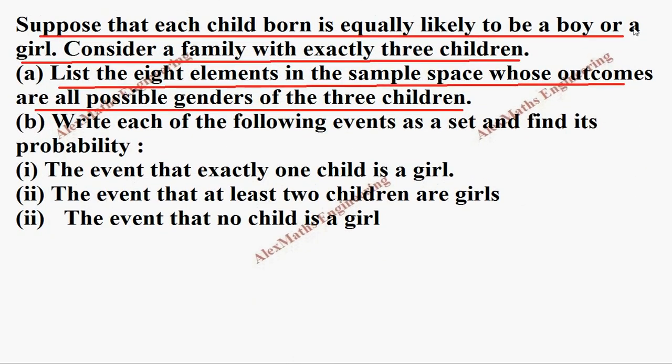Now we have to write the sample space. In subdivision (a), the sample space S—either boy or girl—we have three children, so all can be boy. This is one option, or it can be boy boy girl, or boy girl boy.